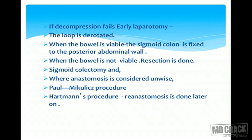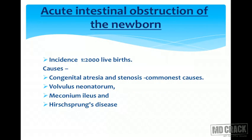The loop is derotated. When the bowel is viable, the sigmoid colon is fixed to the posterior abdominal wall. When the bowel is not viable, resection is done. Sigmoid colectomy is done where anastomosis is considered unwise — Paul Mikulicz's procedure or Hartmann's procedure is done, and reanastomosis is done later.